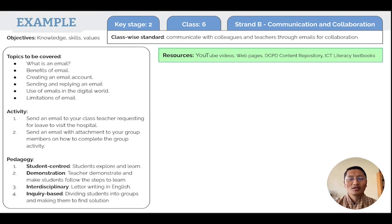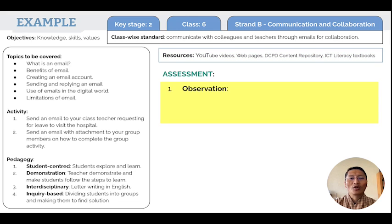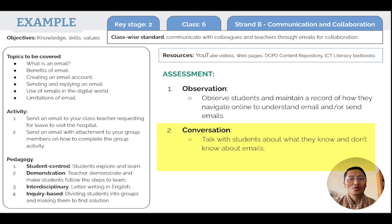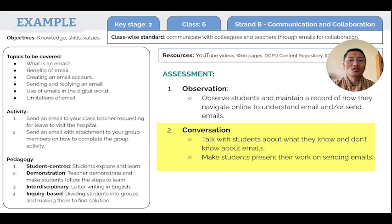After resources have been identified, the final step is to identify the assessment. Assessment for the email topic can be done through observation, where teachers observe students' use of email or their navigation on online websites to learn more. Conversation is another method — teachers talk with students in a one-to-one interview about what they know and don't know. Teachers can also have students present their work on emails to the class, identifying strengths and understanding.